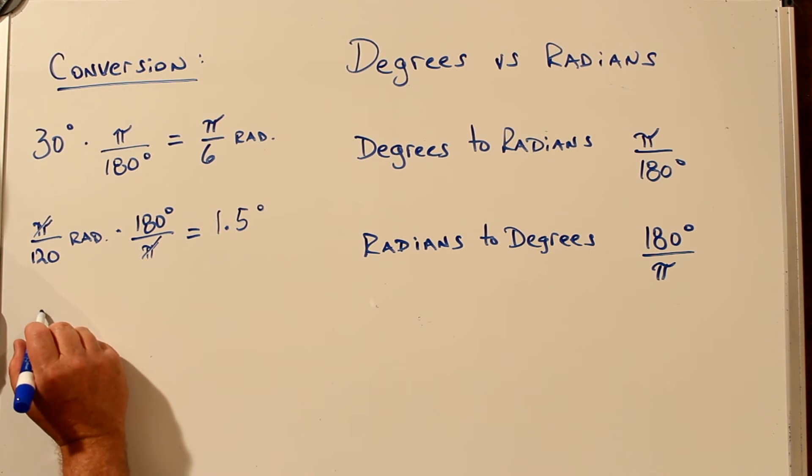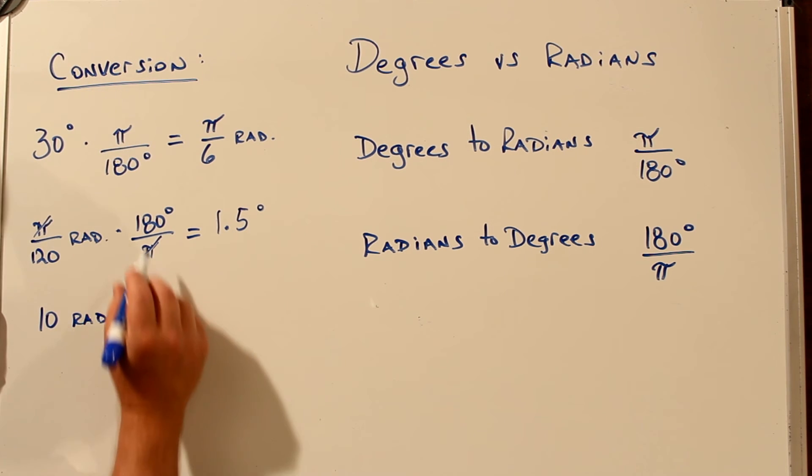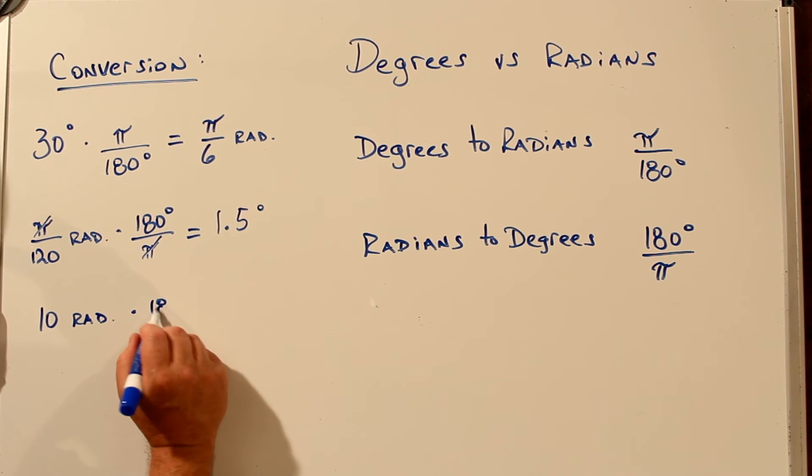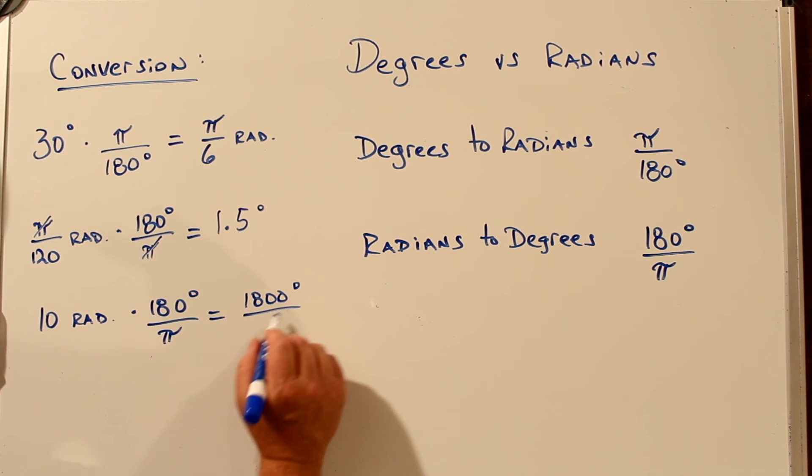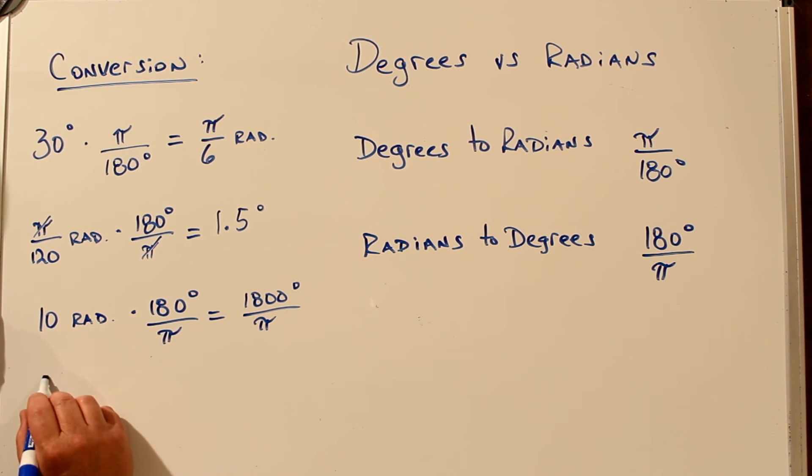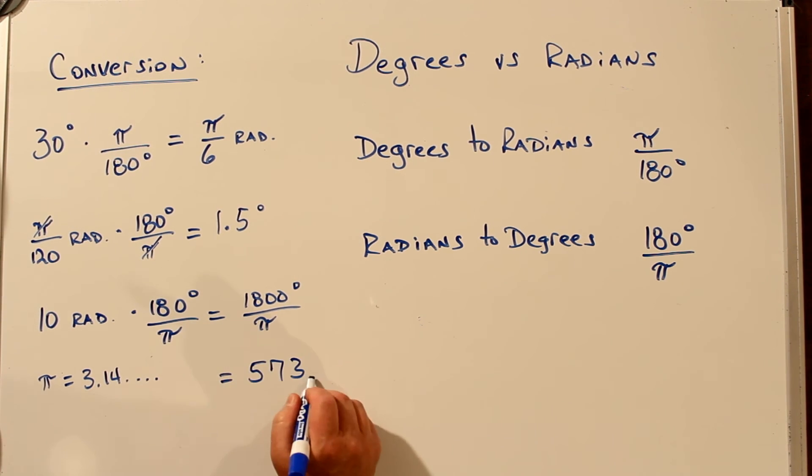If you have a whole number of radians, 10 radians, you would still use the same conversion factor, degrees on top. You could either leave the answer in terms of the symbol pi, you would have 1800 over pi degrees, or if you needed a decimal place, you would use some substitution for pi to whatever unit of decimal places you needed for accuracy. 573.25 degrees.